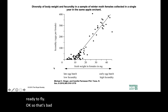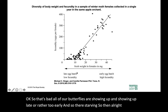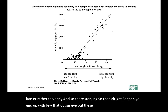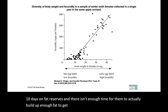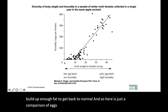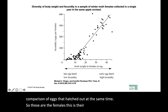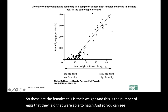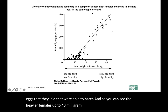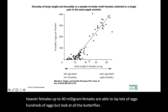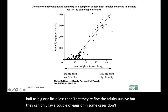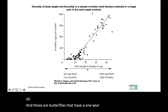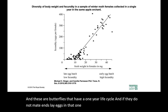So all the butterflies are showing up too early and they're starving. A few do survive, but these that survive have gone for 10 days on fat reserves, and there isn't enough time to build up enough fat to get back to normal. Here is a comparison of eggs that hatched at the same time — these are the females, this is their weight, and this is the number of eggs that they laid that were able to hatch. The heavier females, up to around 40 milligrams, are able to lay hundreds of eggs. But butterflies that are even about half as big can only lay a couple of eggs or in some cases don't lay any at all. These are butterflies with a one-year life cycle — if they do not mate and lay eggs in that one year, they are just removed from the gene pool.